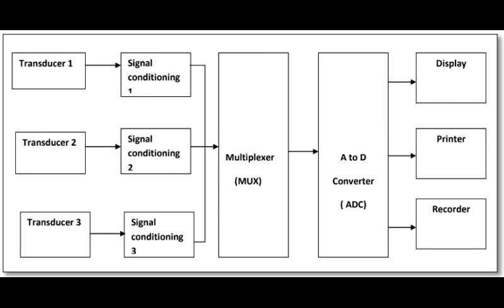Data Acquisition System. A Data Acquisition system is used for the measurement and processing of plant signal data before it is displayed on the operator desk or permanently recorded.